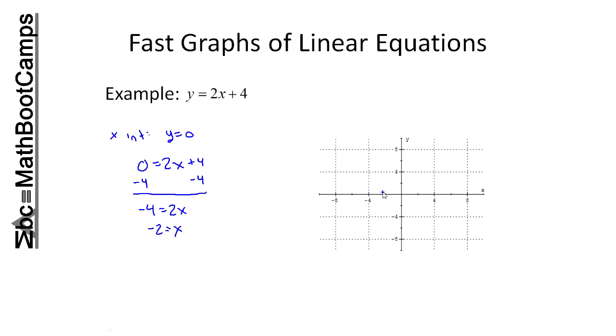That means I have an x-intercept of minus 2. The actual point is minus 2 comma 0, but I don't actually need that information to plot this.